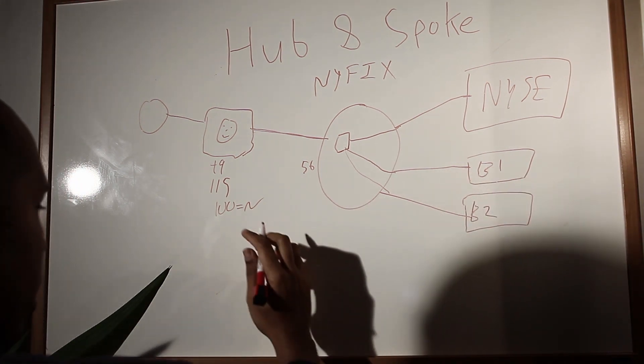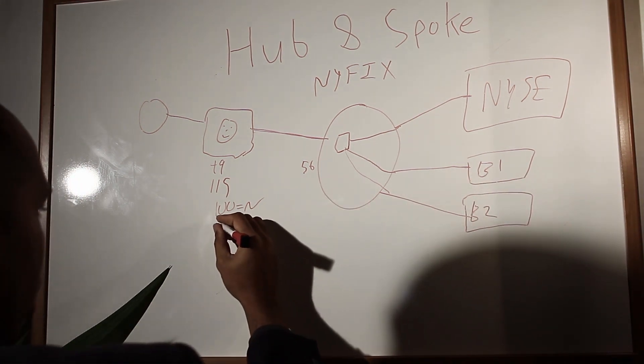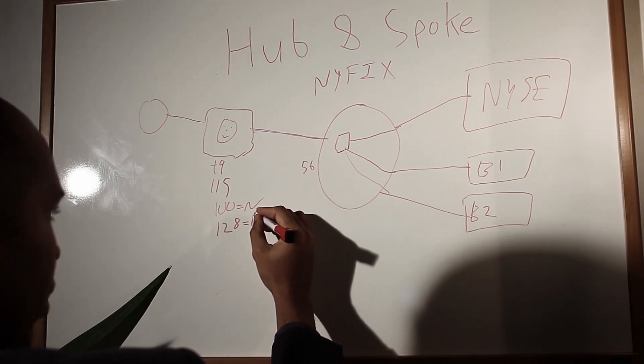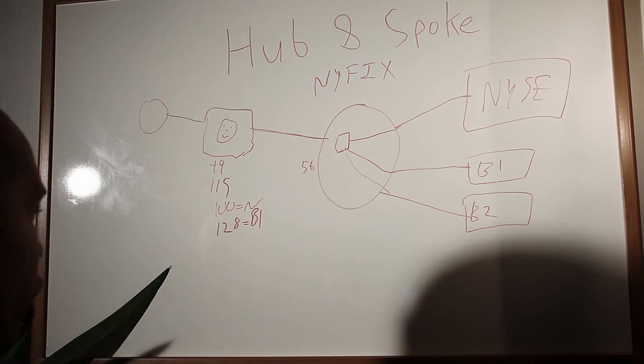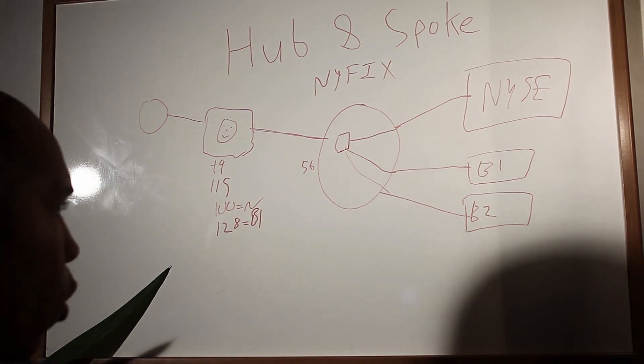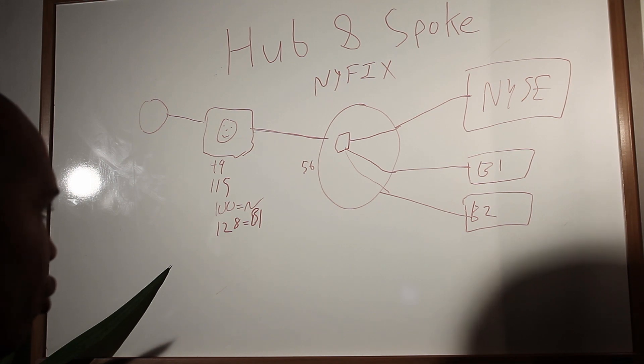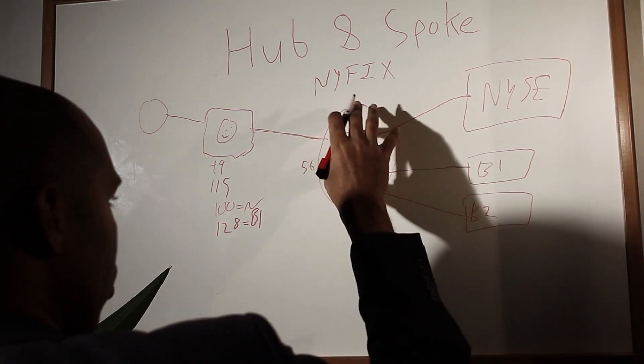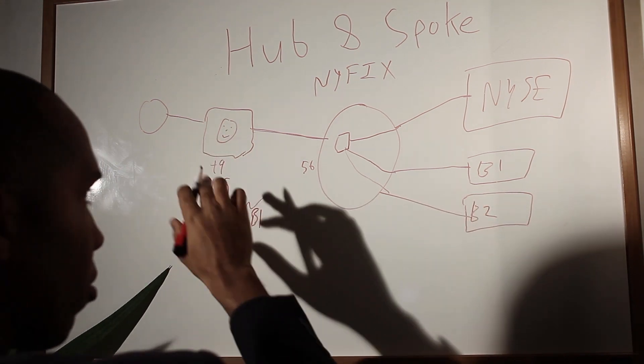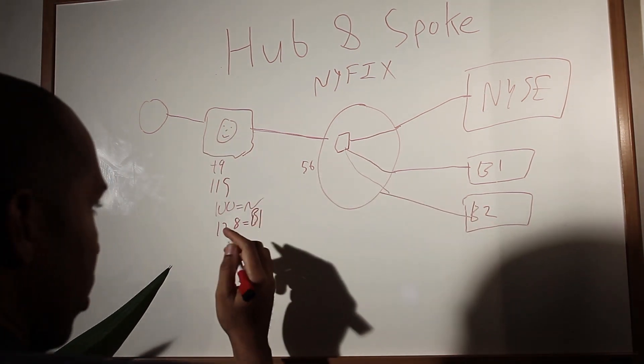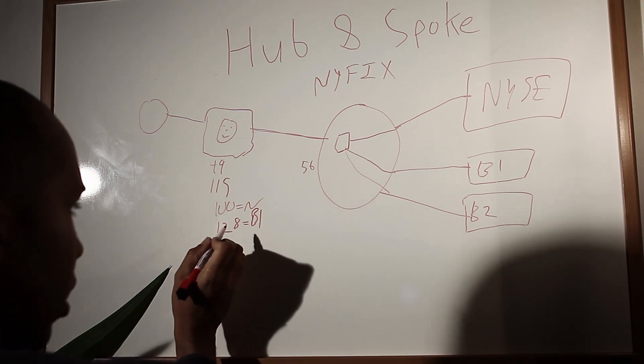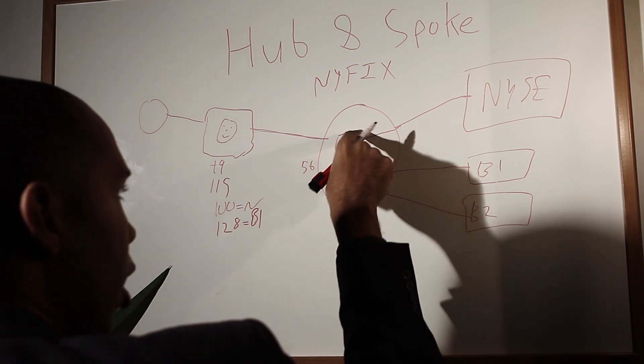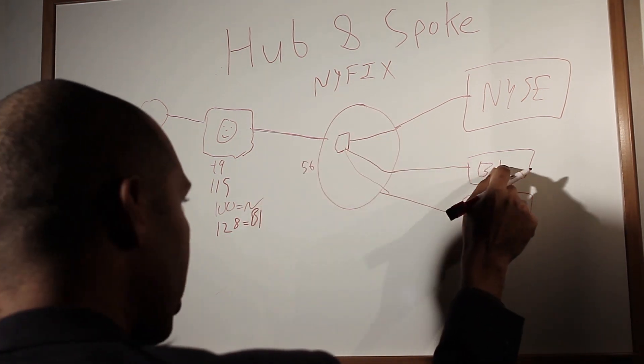Or for broker one, I can target broker one by saying deliver to comp of B1. It's a horrible looking B. That's the worst B I've ever seen. Or I can say deliver to comp of B2. So when I send the order, I target 56. So that gets me into Nifix. Nifix knows who I am. They know I'm 49. And I'm saying to Nifix, hey, I want to send deliver to comp. My deliver to company is B1. So these guys in the hub know to route my order to B1.